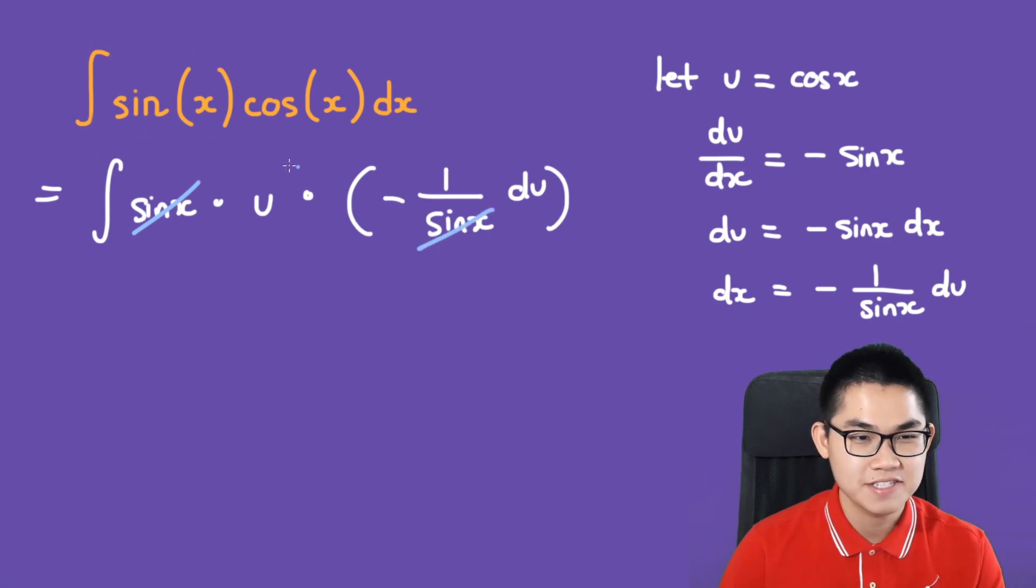We also have to move the negative outside of the integral. So we have negative integral of u du.